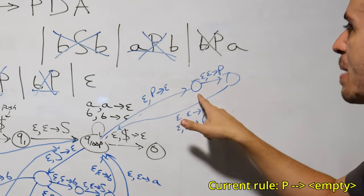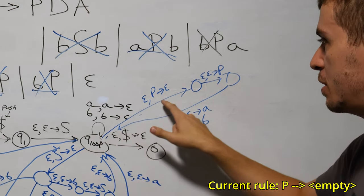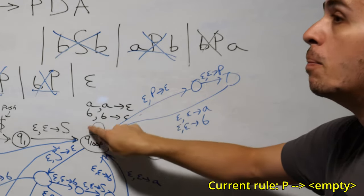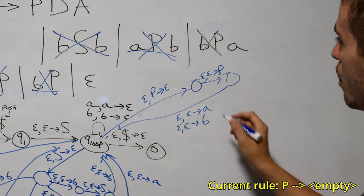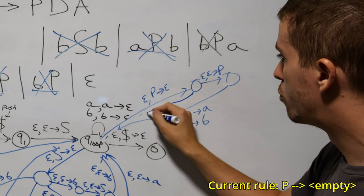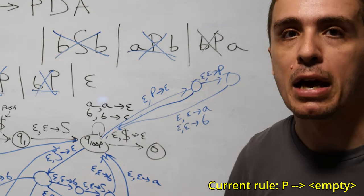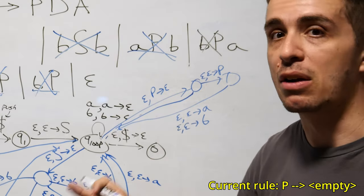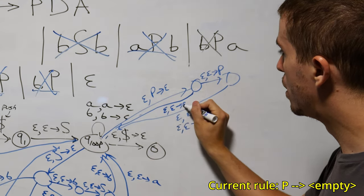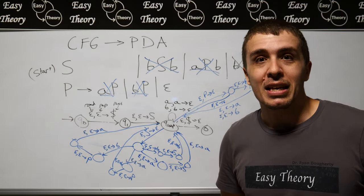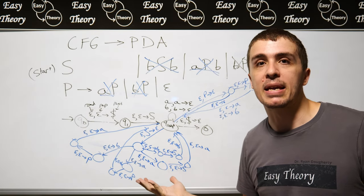We can do another self-loop here which effectively handles the P goes to epsilon rule — epsilon, epsilon goes to epsilon: doing nothing to the stack, not popping, not pushing, not reading. And laboriously, we are finally done. We've converted this context-free grammar into this particular PDA.